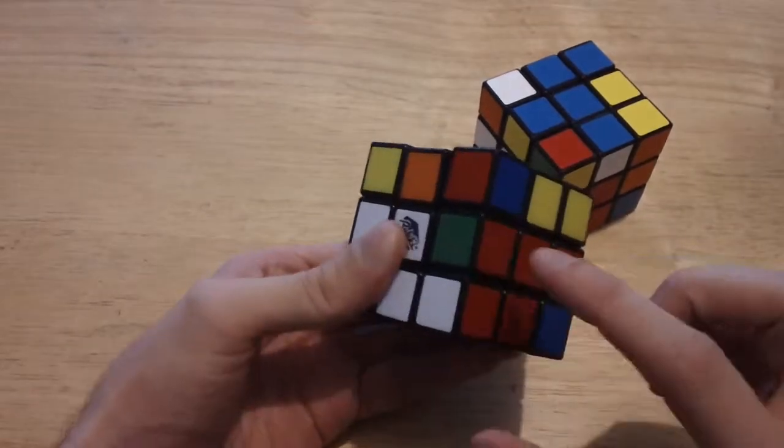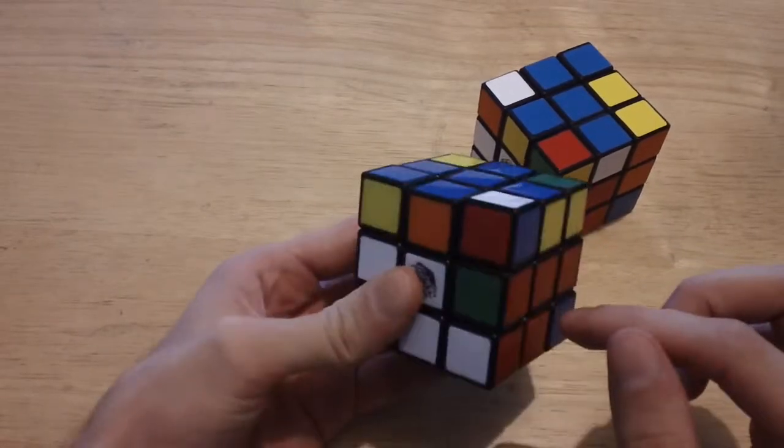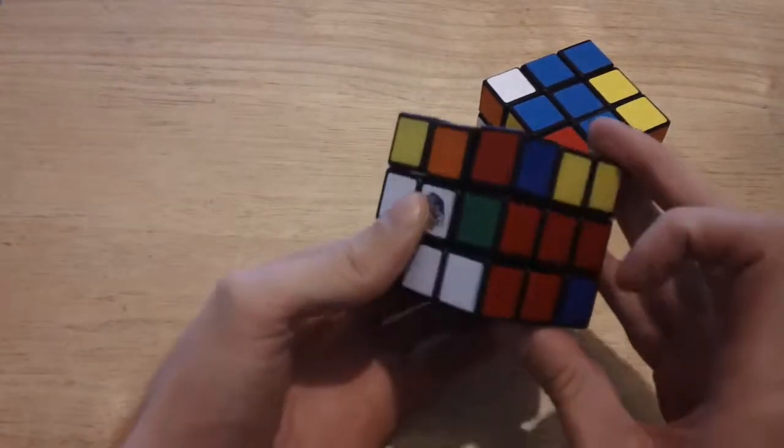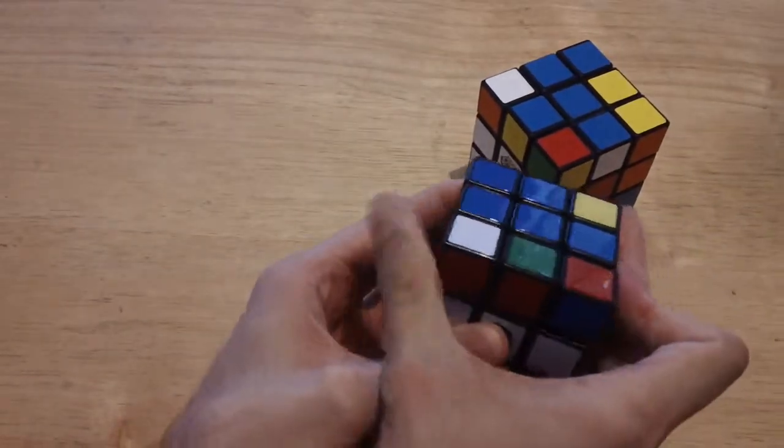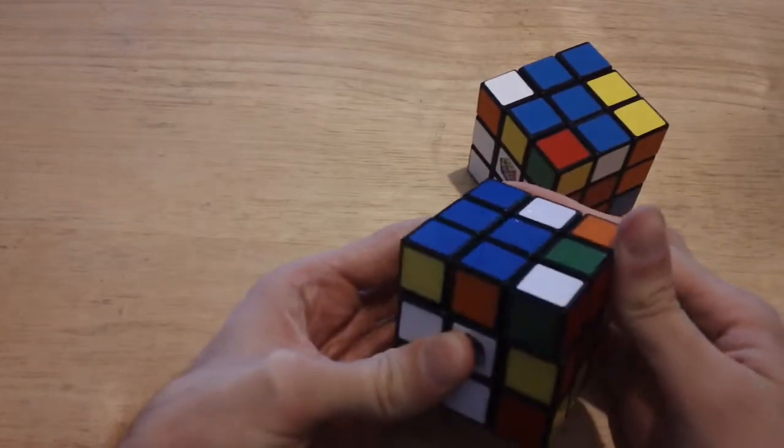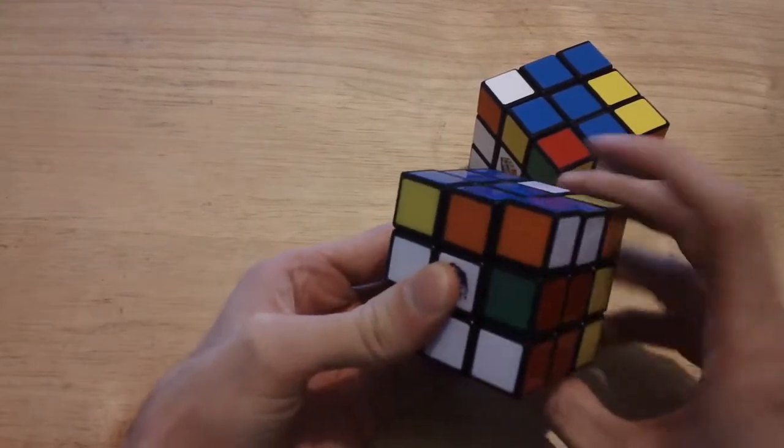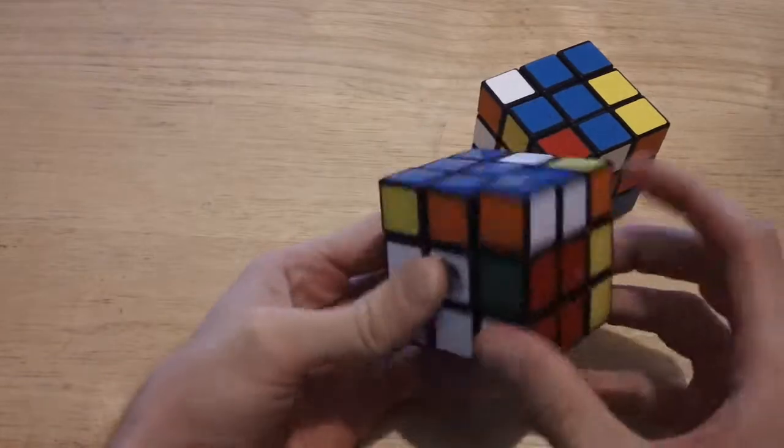Now we're going to put the white-red piece into place. It is right here. We're going to have to separate these. Move that out the way. Bring that up. Move it over there. Bring that back down to where that's into place.